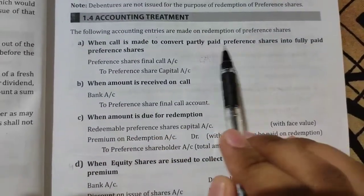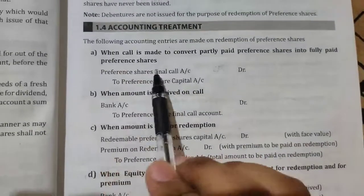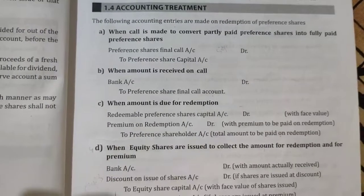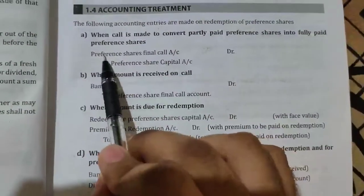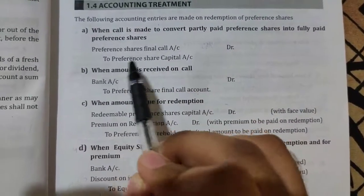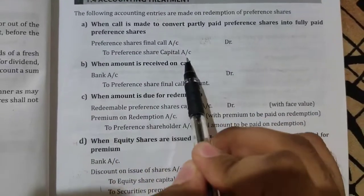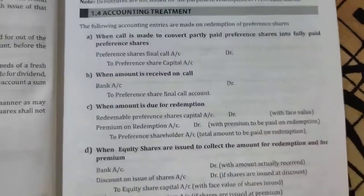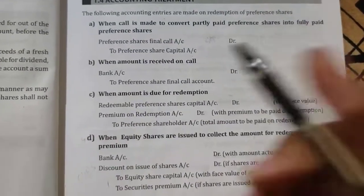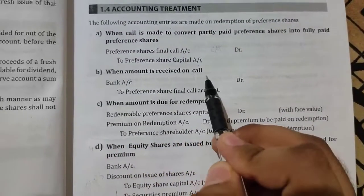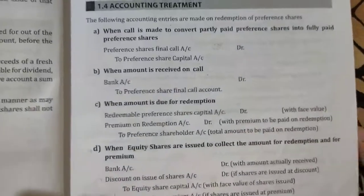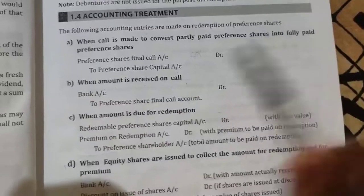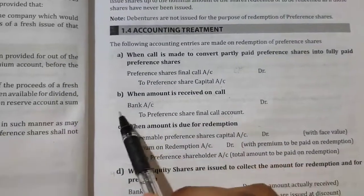When a call is made to convert partly paid-up preference shares into fully paid preference shares, this entry will come: Preference Share Final Call Account Dr. to Preference Share Capital Account. This is the final call — we are calling them to pay this money. The next entry is when the amount is received on call. We have sent a notice to them to please pay the remaining amount, so when they have paid, the entry is: Bank Account Dr. to Preference Share Capital Account.